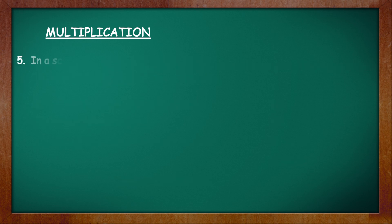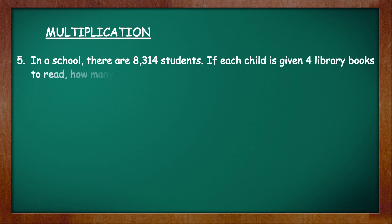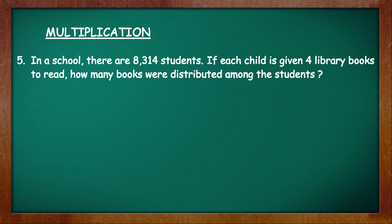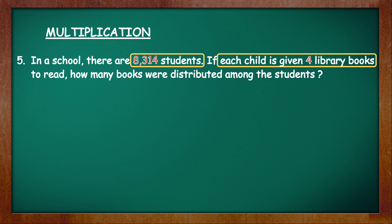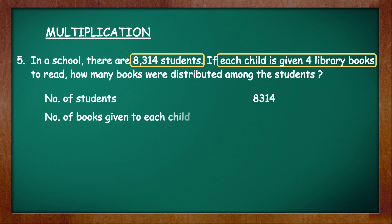Question number 5. In a school, there are 8314 students. If each child is given 4 library books to read, how many books were distributed among the students? In this question, we know the total number of students and the number of library books given to each student. In order to calculate the number of books distributed, we have to multiply the number of students by the number of library books given to each student. First, write the number of students: 8314. Then, the number of books given to each child: 4.